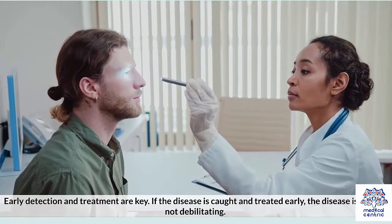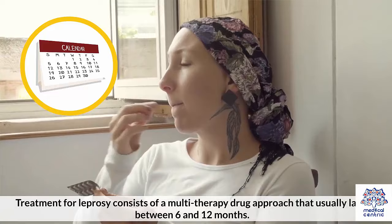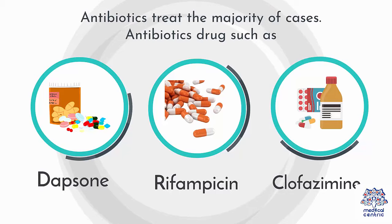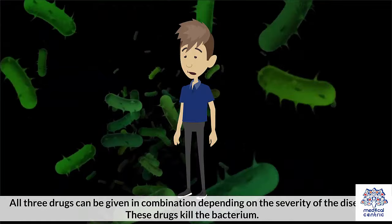Treatment for leprosy consists of a multi-drug therapy approach that usually lasts between 6 and 12 months. Antibiotics treat the majority of cases, including drugs such as dapsone, rifampicin, and clofazamine. All three drugs can be given in combination depending on the severity of the disease, and these drugs kill the bacterium.